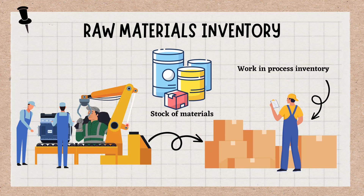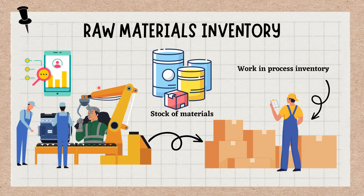Inventory tracking is an important part of supply chain management when it comes to the raw materials used to create work-in-progress inventory and later the finished products. Stock levels must be monitored and costs and labor must be accounted for. Therefore, keeping track of the types of inventory and the materials used to create those inventories is an essential part of proper inventory management. That's why many businesses turn to inventory management software to help with this process.